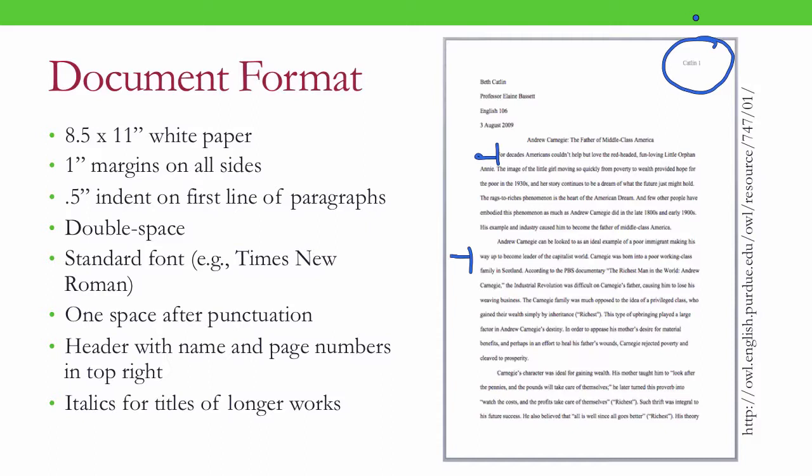In MLA format, like some of the others, we have longer works being specified by italics. So a book title will be italicized, and an album of music will also be italicized, whereas shorter works — like an article, a poem, or in music a song — will have quotation marks around them.